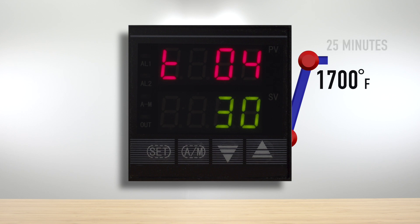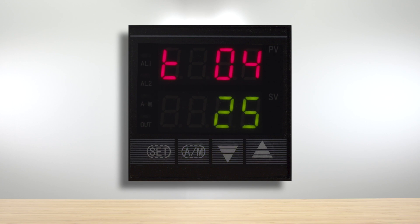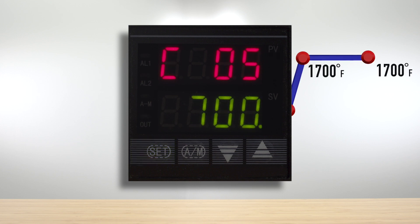So we're going to hit set again. This is going to be a 25 minute burn. So we're going to set this time here to 25 minutes. So we're at 25. Now our next step is also going to be the end of our burn in procedure which is also going to end at 1700 degrees. So we're already at 700 so we're just going to bump the cursor over to the left and change that to a 1.